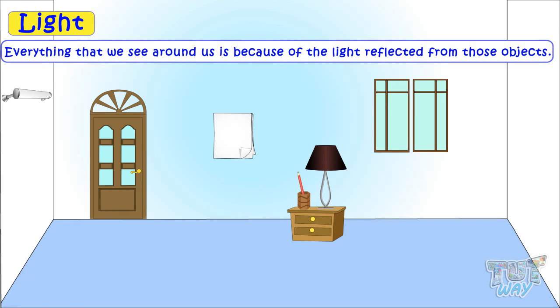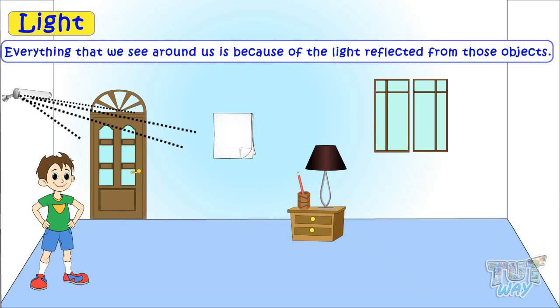There may be many things around you: a pencil, a paper, a door, and a lamp. Everything is seen because of light reflected from it.